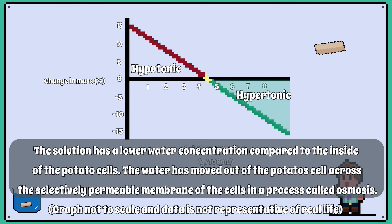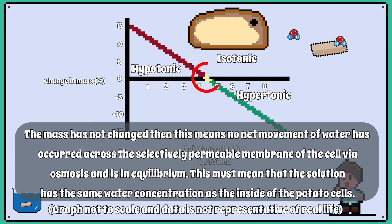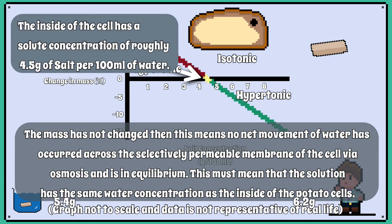If the mass has not changed, then this means no net movement of water has occurred across the selectively permeable membrane of the cell via osmosis, and therefore the system is in equilibrium. This must mean that the solution has the same water concentration as the inside of the potato cells, and the scientific term for this type of solution is called isotonic.